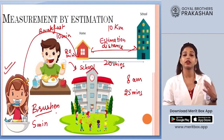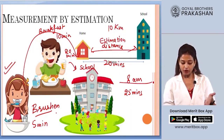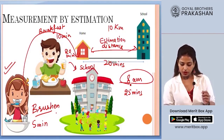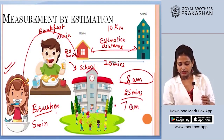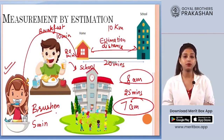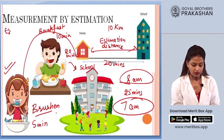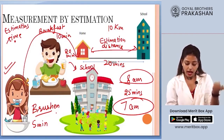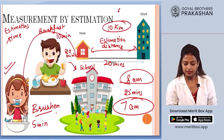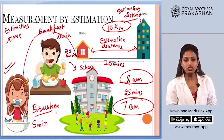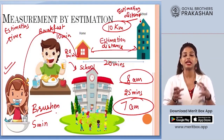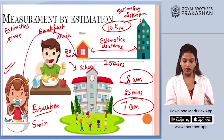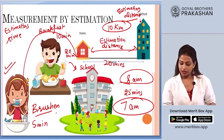So you can estimate that if your school starts at 8 AM and you need about 25 minutes to get ready plus 20 minutes to travel, you should get up around 7 AM. In all these processes, you are estimating — in one case estimating time for different activities, and in the second case estimating distance. This is how estimation is part of our daily life.